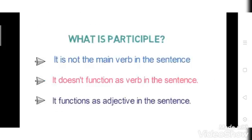Now what is a participle? It is not the main verb in the sentence. The participle used in the sentence is not the main verb — it does not function as a verb in the sentence. The participle functions as an adjective in the sentence. The participle is not a verb; it is just a form of verb. It is not the main verb in the sentence.